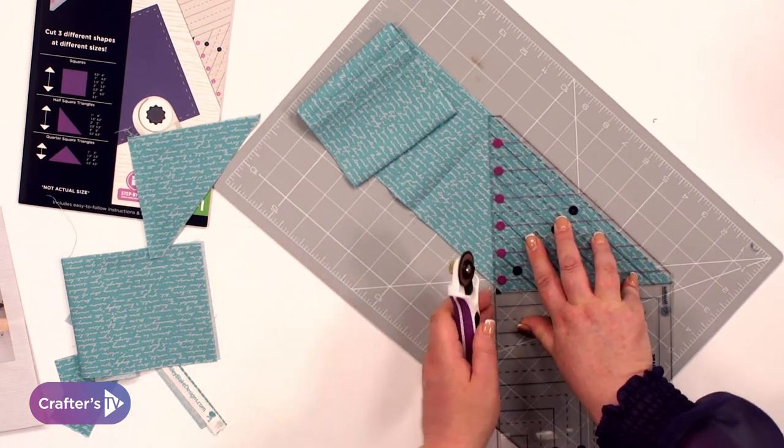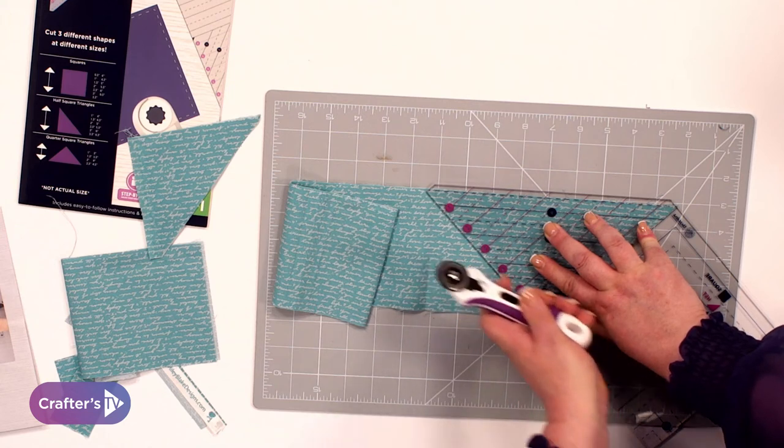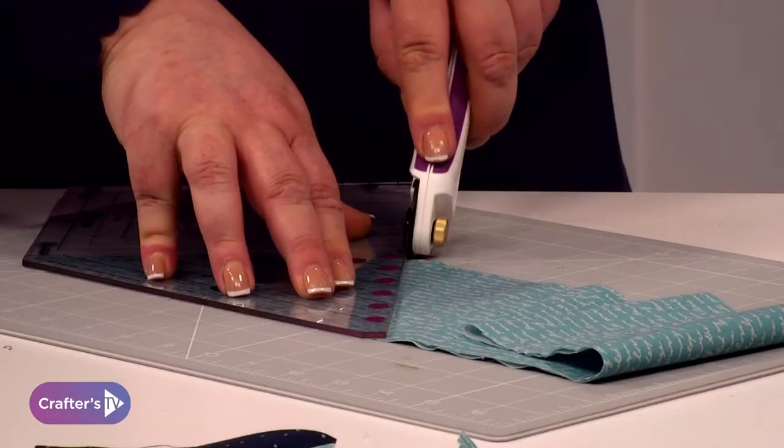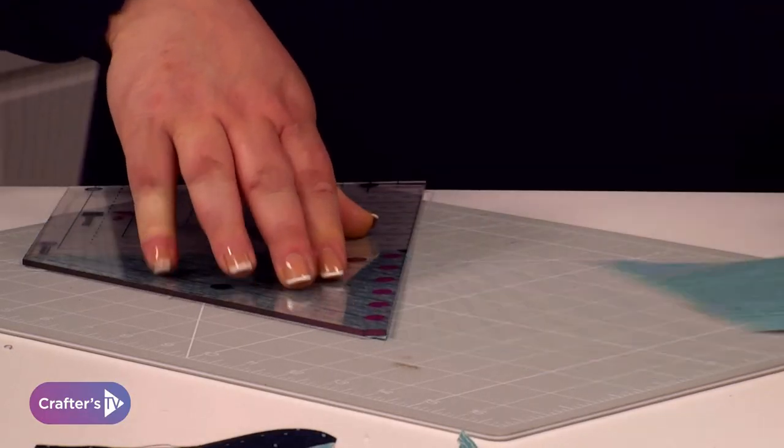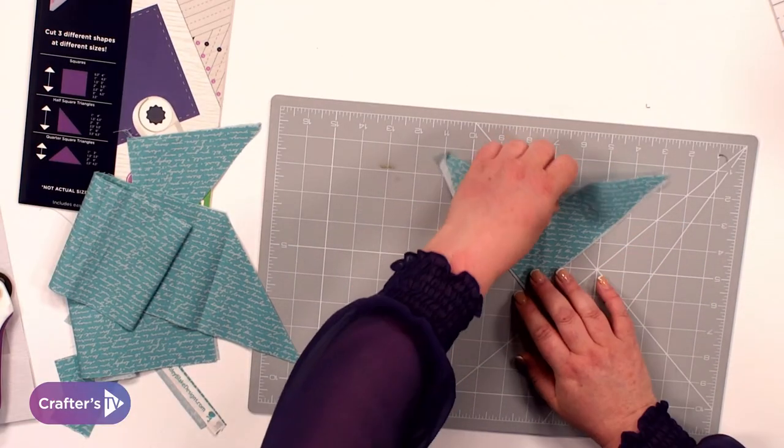I'm turning my mat to cut. So if I've got it that way, it means I'm cutting it at an awkward angle. So if you just tilt your mat so you're cutting away from yourself and then we've got the quarter square triangles.